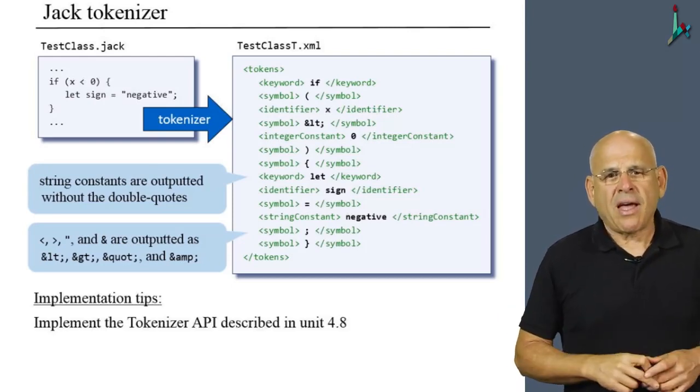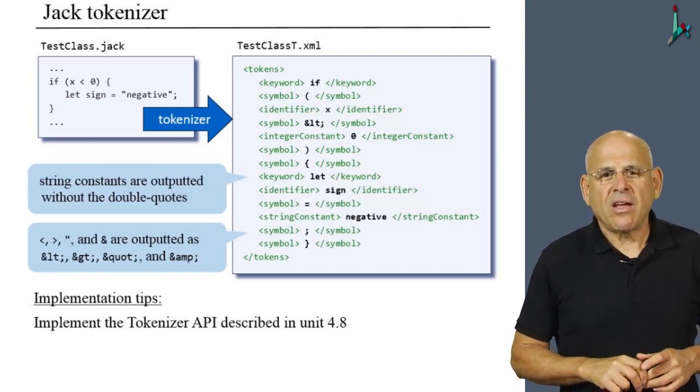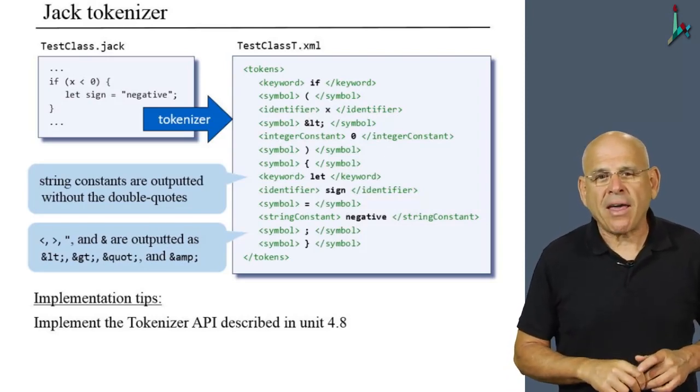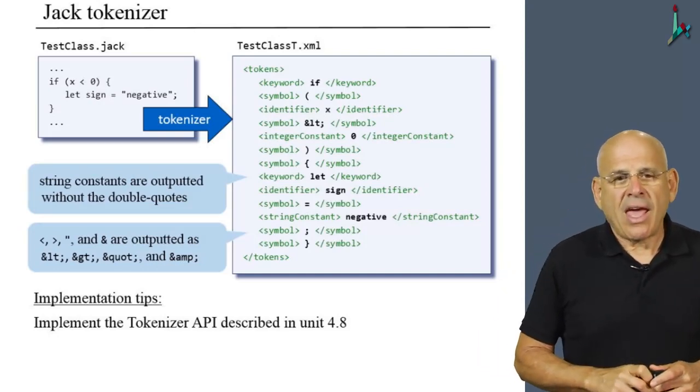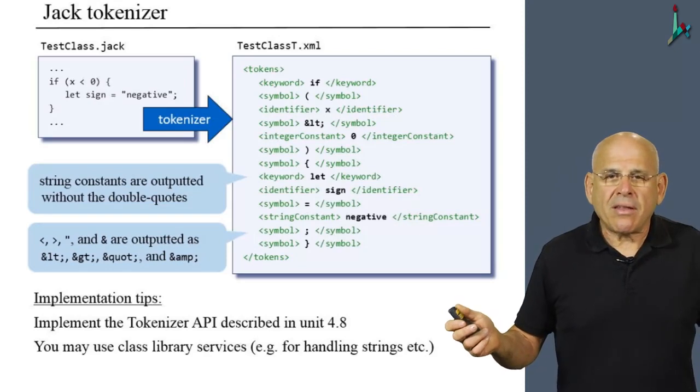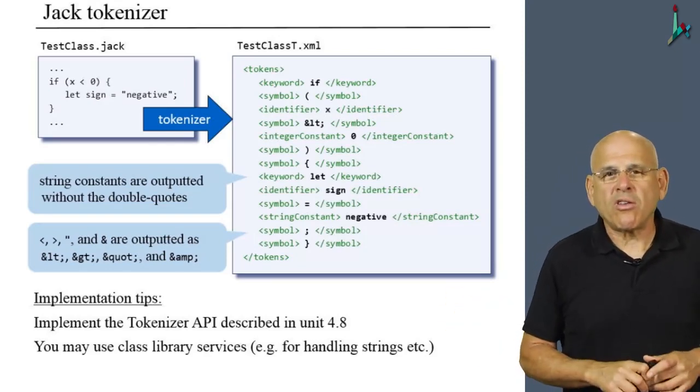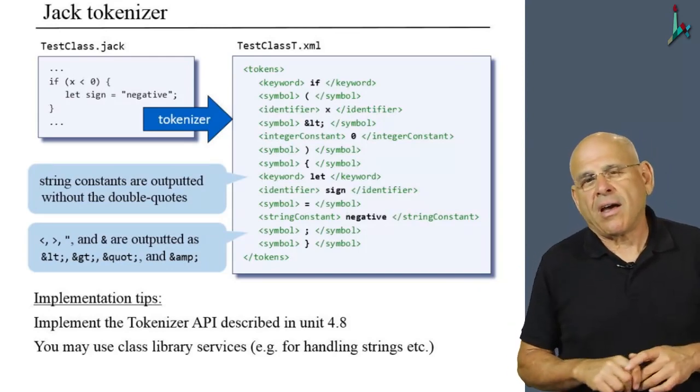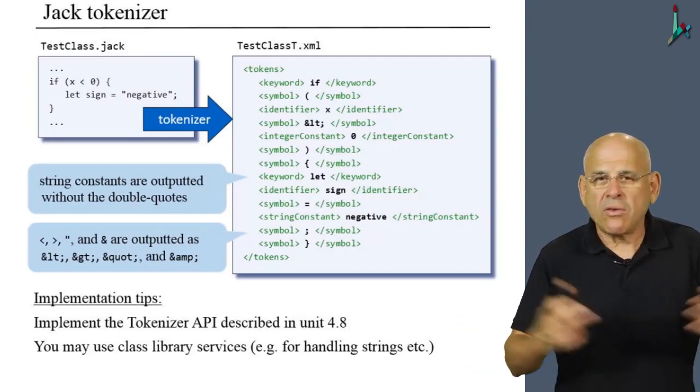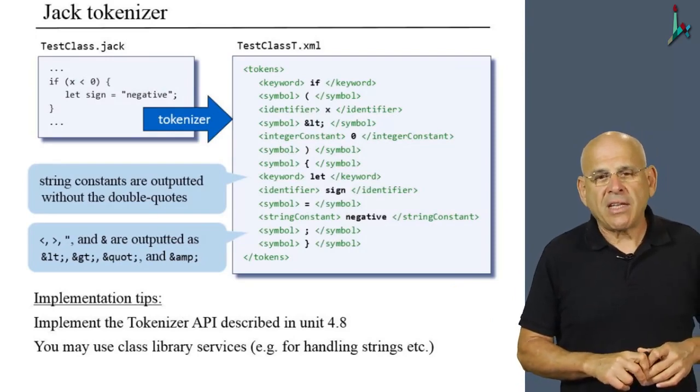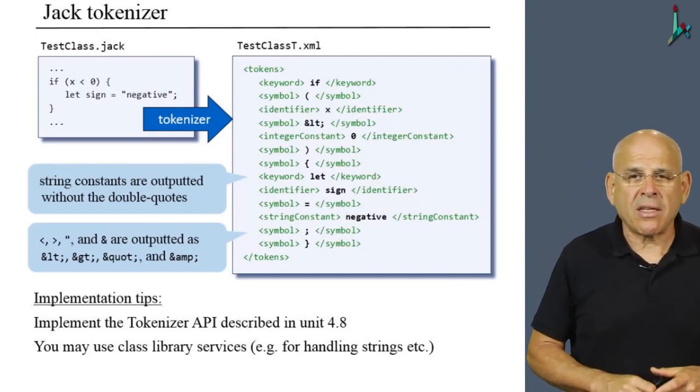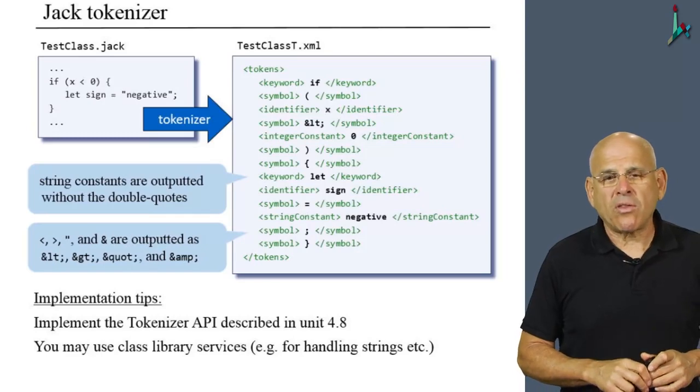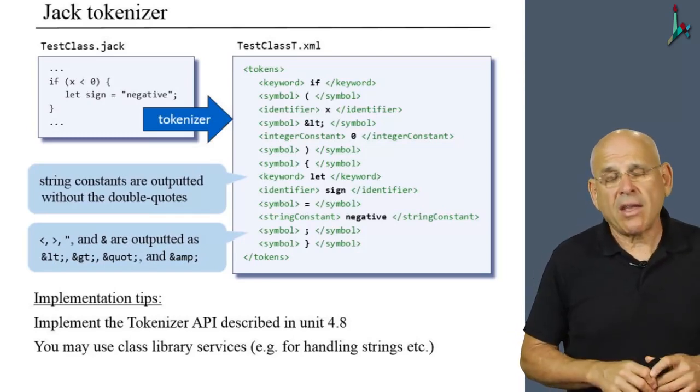So how should you build this tokenizer? Well, we propose that you, or we actually request that you follow the API described in unit 4.8. You have to remember that everything in this module, both the tokenizer and the parser, is essentially a text processing challenge. Therefore, you're welcome to use everything that your language facilitates in the way of string processing and handling regular expressions and whatnot. It's up to you to look at the libraries and decide what to use. You don't have to use these things, but you can if you wish.